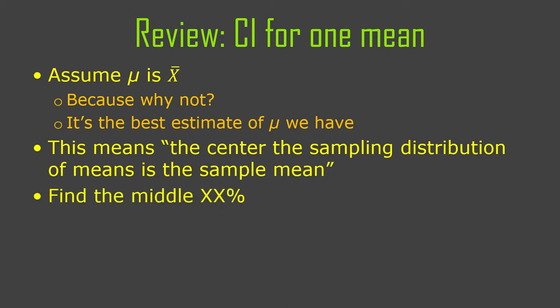So then we just find the middle — whatever, 90, 95, 99% — of the sampling distribution there, and we've got our confidence interval. It's just the middle, say 95%, of all possible sample means that we think we might find under random sampling, if the mean of the population was the same as our sample mean. And we usually interpret that by saying we're 95% confident that the true mean is between these two numbers.